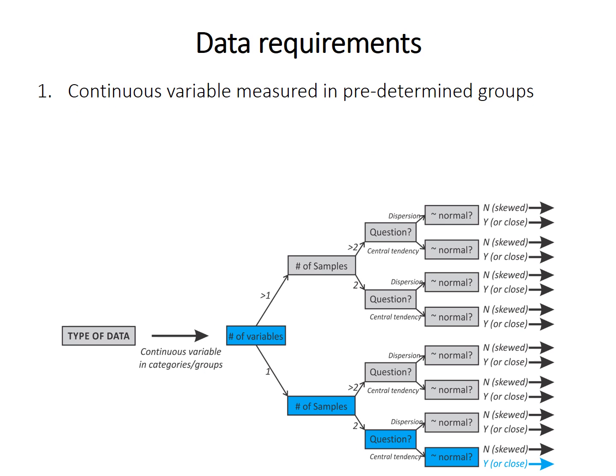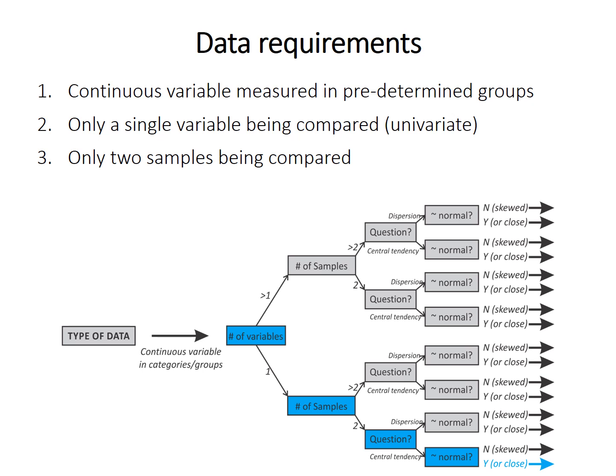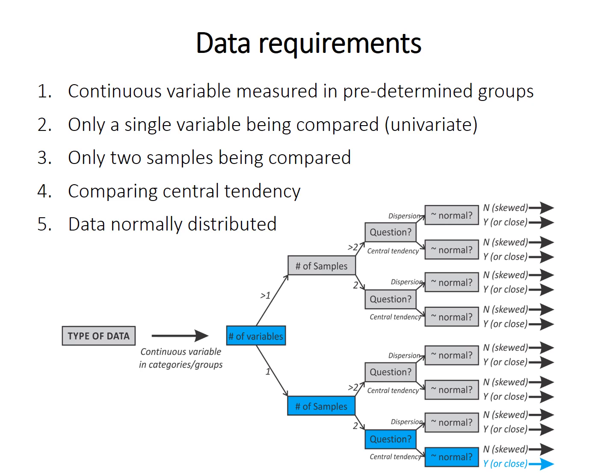These are the requirements for performing a t-test, or the assumptions of the test. Your data must be measured with a continuous variable divided into predetermined categories or groups. You must have univariate data, meaning you're comparing only a single variable between samples. The t-test compares only two samples, and it's designed to compare central tendency — the mean specifically. Finally, the t-test is a parametric test, so the data must be normally distributed.